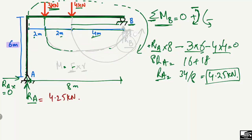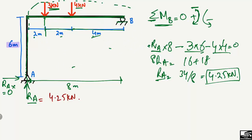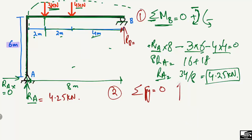Now we have to find RB. For this we use another equilibrium equation: summation of vertical forces equals zero. Upward forces are taken as positive and downward forces are taken as negative.